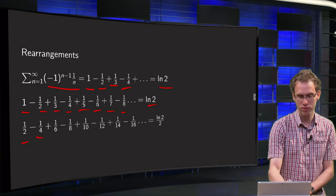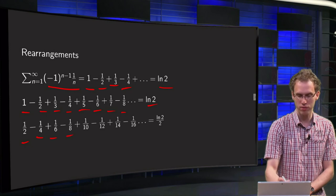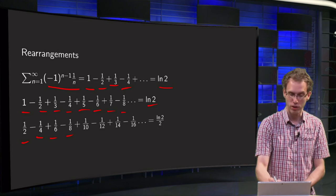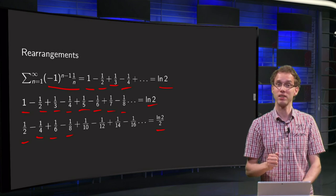So we get 1/2 - 1/4 + 1/6 - 1/8 plus all the other terms. If I take one half on the left hand side, I should take one half on the right hand side, so I get ln 2 over 2.